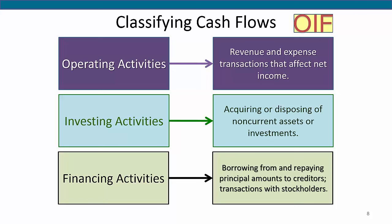Individual cash receipts and payments for each of these three categories are labeled to identify their originating transactions and events. A net cash inflow, a source, occurs when the receipts in a category exceed the payments. A net cash outflow, a use, occurs when the payments in a category exceed the receipts.